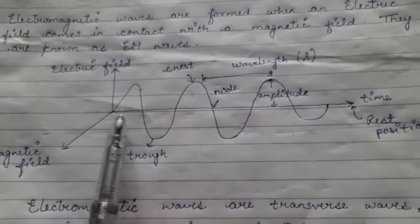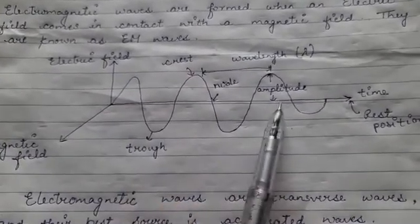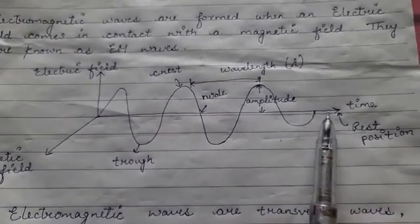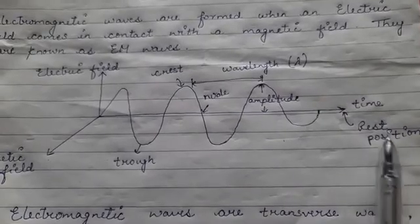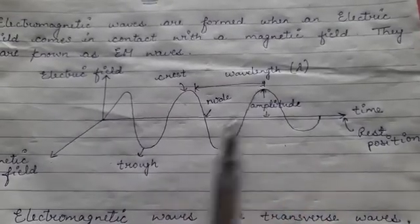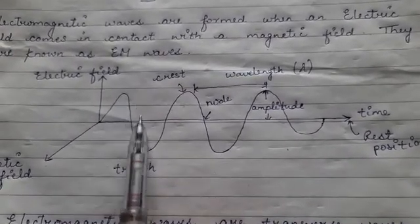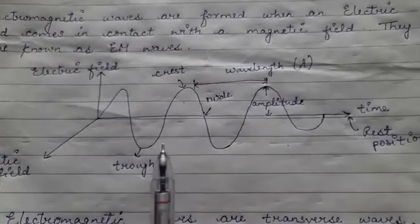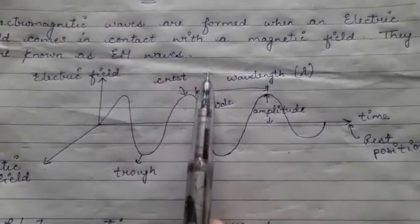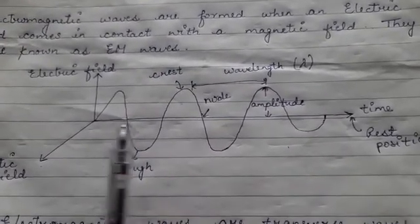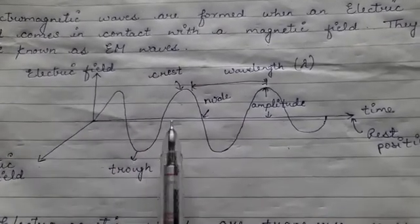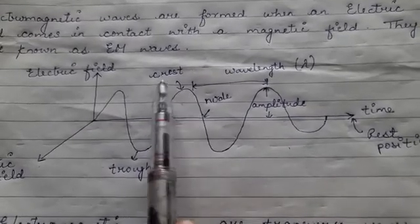As the wave travels, the rest position is the center line, and the start is the moveable position. When the wave is generated, two parts are made: the lower part is the trough, and the upper part is the crest.